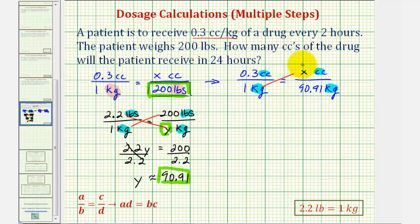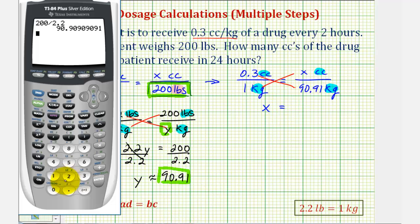So 1 times x must equal 0.3 times 90.91. Enter. So x is approximately 27.27.